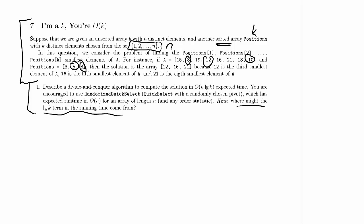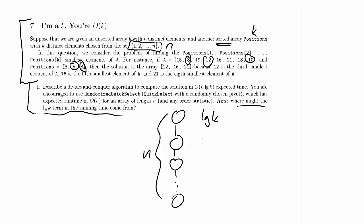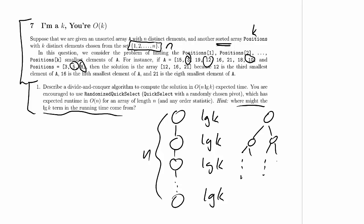In a divide-and-conquer algorithm, the log k term could come from many places. For instance, we might have a stick-shaped recursion tree with n levels, and if we do log k work at each level — say, binary search in positions — we'd get n log k total work. Alternatively, a tree with n leaves each spending log k time in the base case would also yield n log k work.